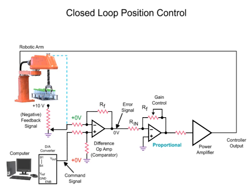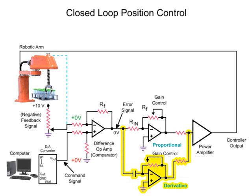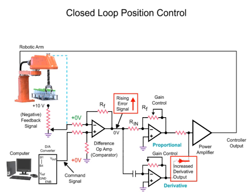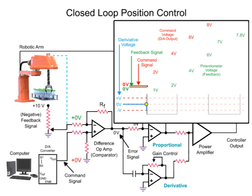To achieve a fast response time and minimize overshoot of the desired position, a derivative amplifier is added to the circuit. The derivative amplifier produces an output while the signal applied to its input is changing. As the arm lags behind the command signal, the error signal generated causes the derivative amplifier to produce a voltage that adds to the output of the proportional amplifier. The sum of both voltages is applied to the power amp, which results in the robotic arm accelerating at a similar rate as the changing command signal.